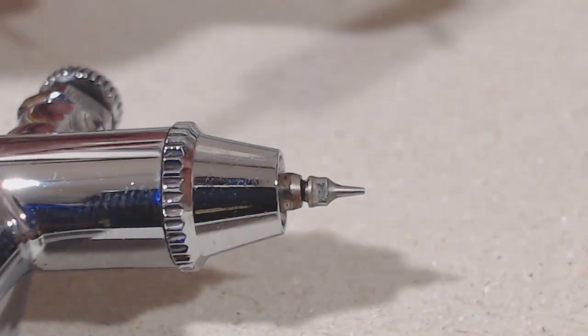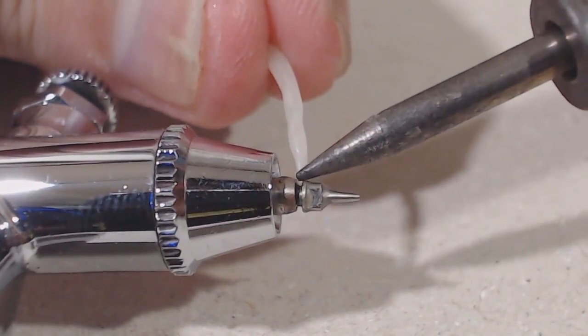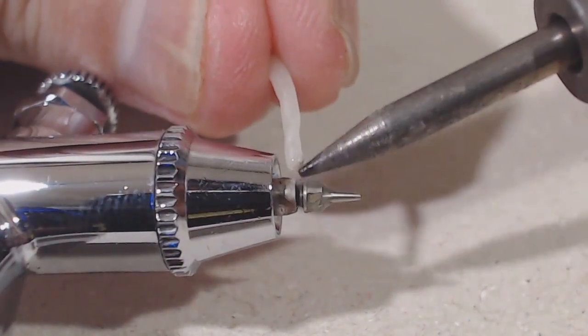Next, place the tip of the soldering iron between the gap of the nozzle and let the wax melt and drip into the gap.